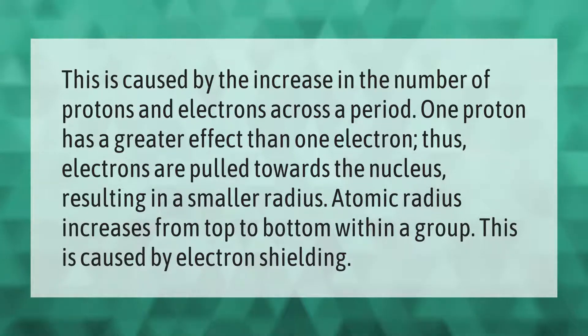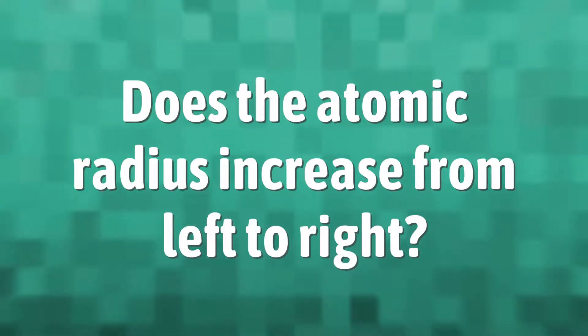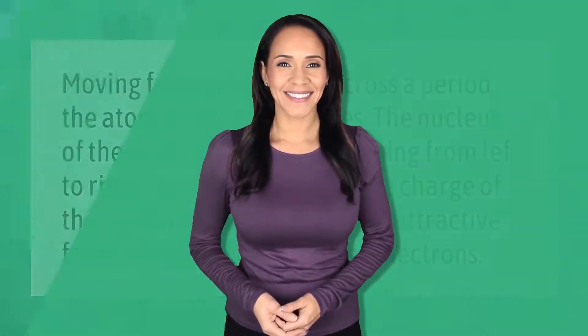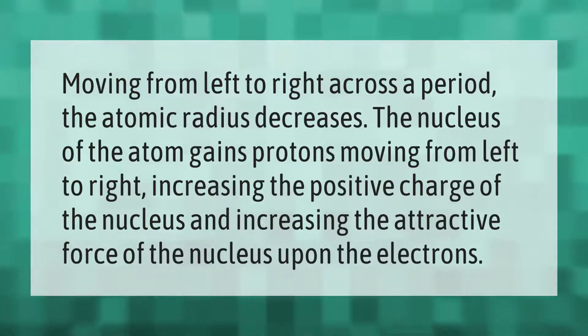Atomic radius increases from top to bottom within a group. This is caused by electron shielding.